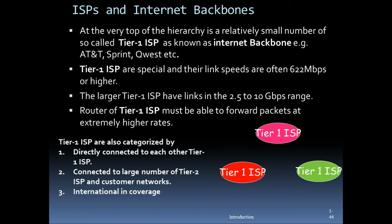Tier one ISP link speeds are often 622 Mbps or higher. The larger tier one ISPs have links in the 2.5 to 10 Gbps range. Routers of tier one ISPs must be able to forward packets at extremely high rates.